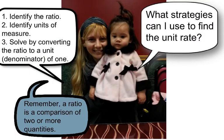So how do I find the unit rate? There are three steps we always need to remember. First, we need to identify the ratio. Then we need to identify the units of measure — is it miles per gallon or gallons per mile? Next, we need to solve by converting the ratio to a unit rate, which means a denominator of one.